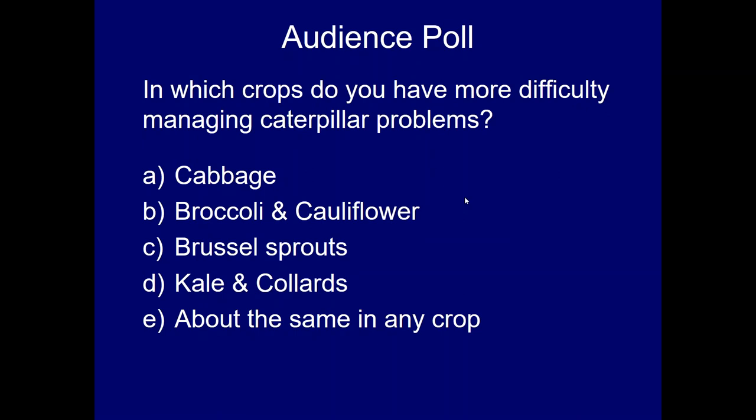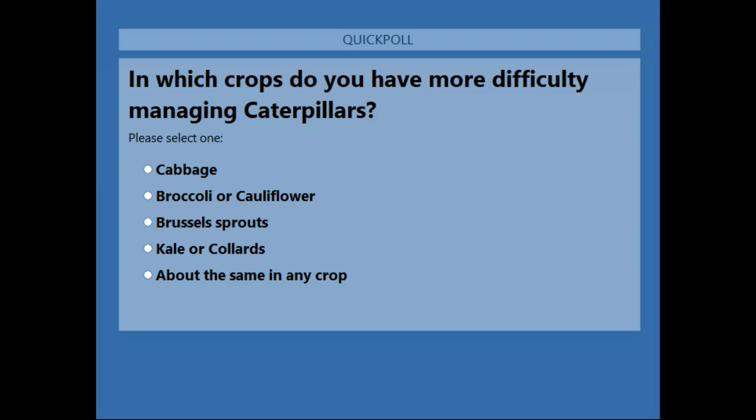That covers a number of parasitoids associated with the imported cabbage worm. Before moving to another caterpillar pest, since we've been discussing several caterpillars over the past two weeks, we'd like to know from you: on which crops are you having more difficulty managing caterpillars? We're launching an audience poll — please indicate whether problems occur in cabbage, broccoli, cauliflower, Brussels sprouts, kale, collards, or about the same across any crop.